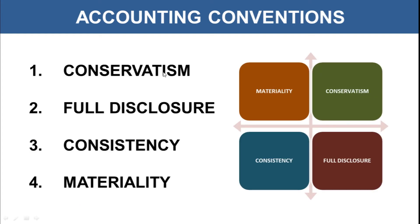Now let's see some of the accounting conventions. The first is conservatism, second is full disclosure, third is consistency, and fourth is materiality. As already discussed, conventions are practices that can be followed — they are not mandatory but are suggested because they make the accounting process more reliable and satisfactory.